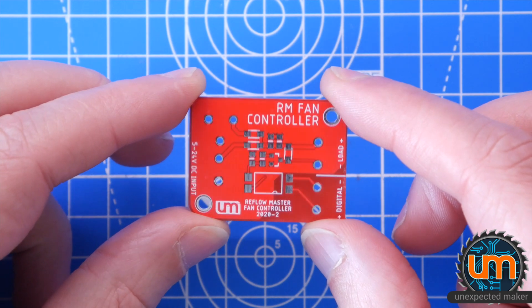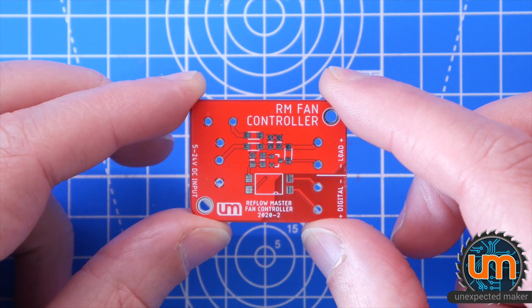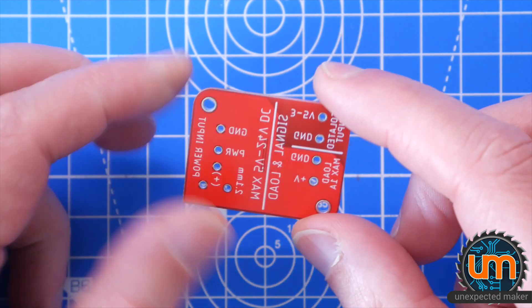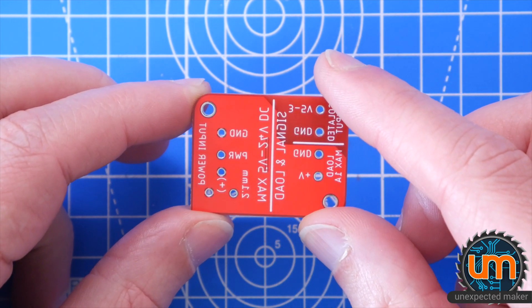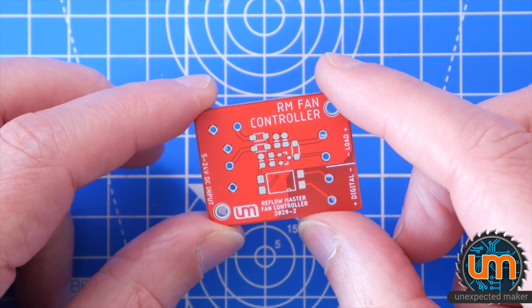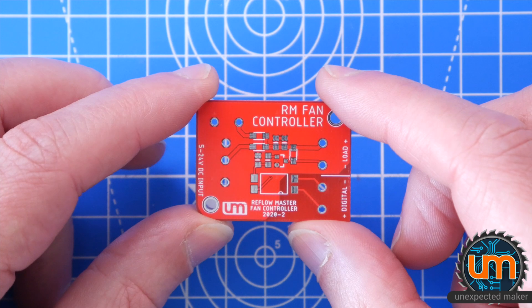Before I start the build I wanted to talk about the elephant in the room. I'm sure that many of you are going to leave a comment letting me know that you can already buy opto isolated MOSFET switches on eBay and Ali. Yes you can. And they're super cheap. They're like a dollar, dollar fifty.